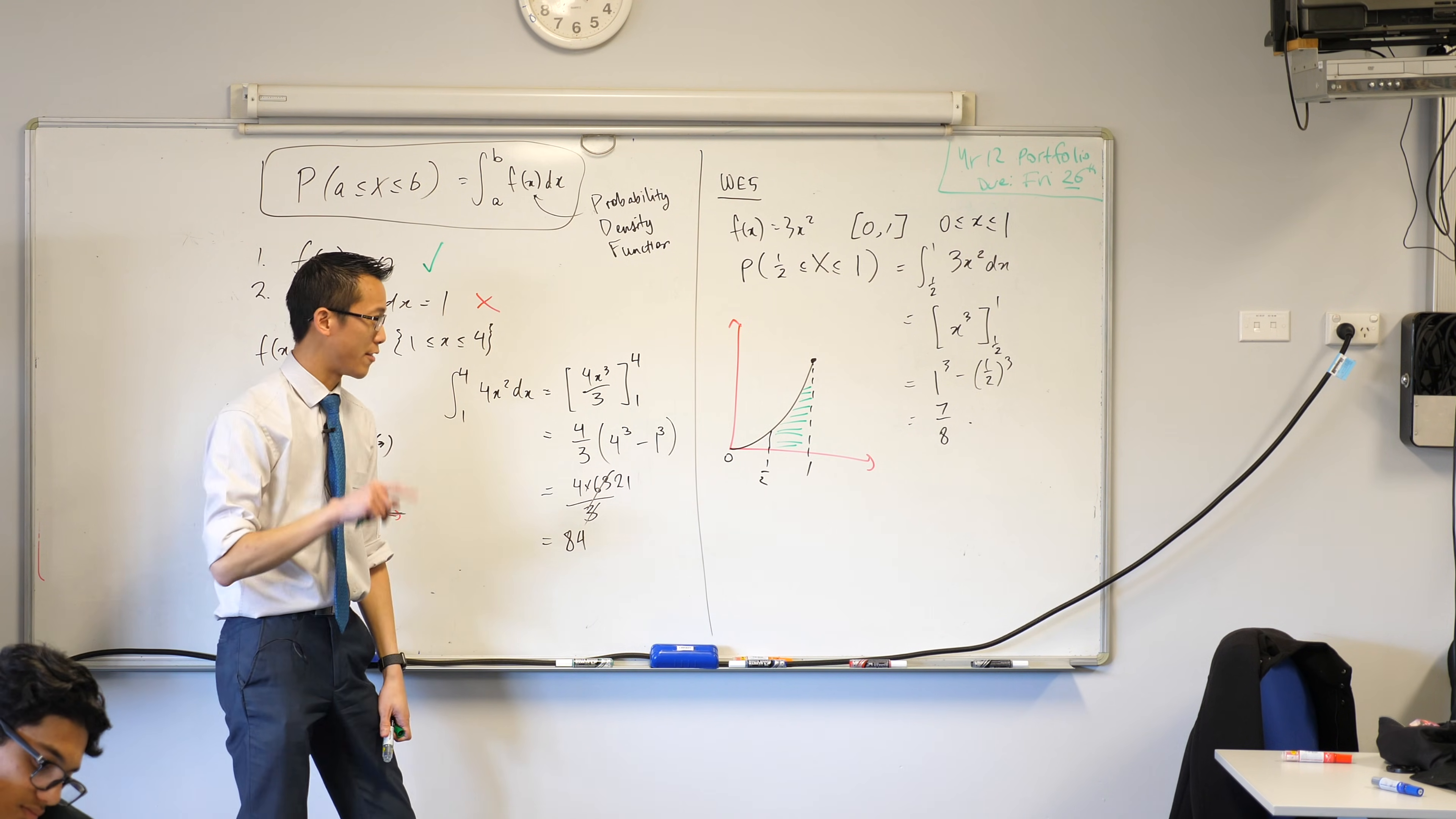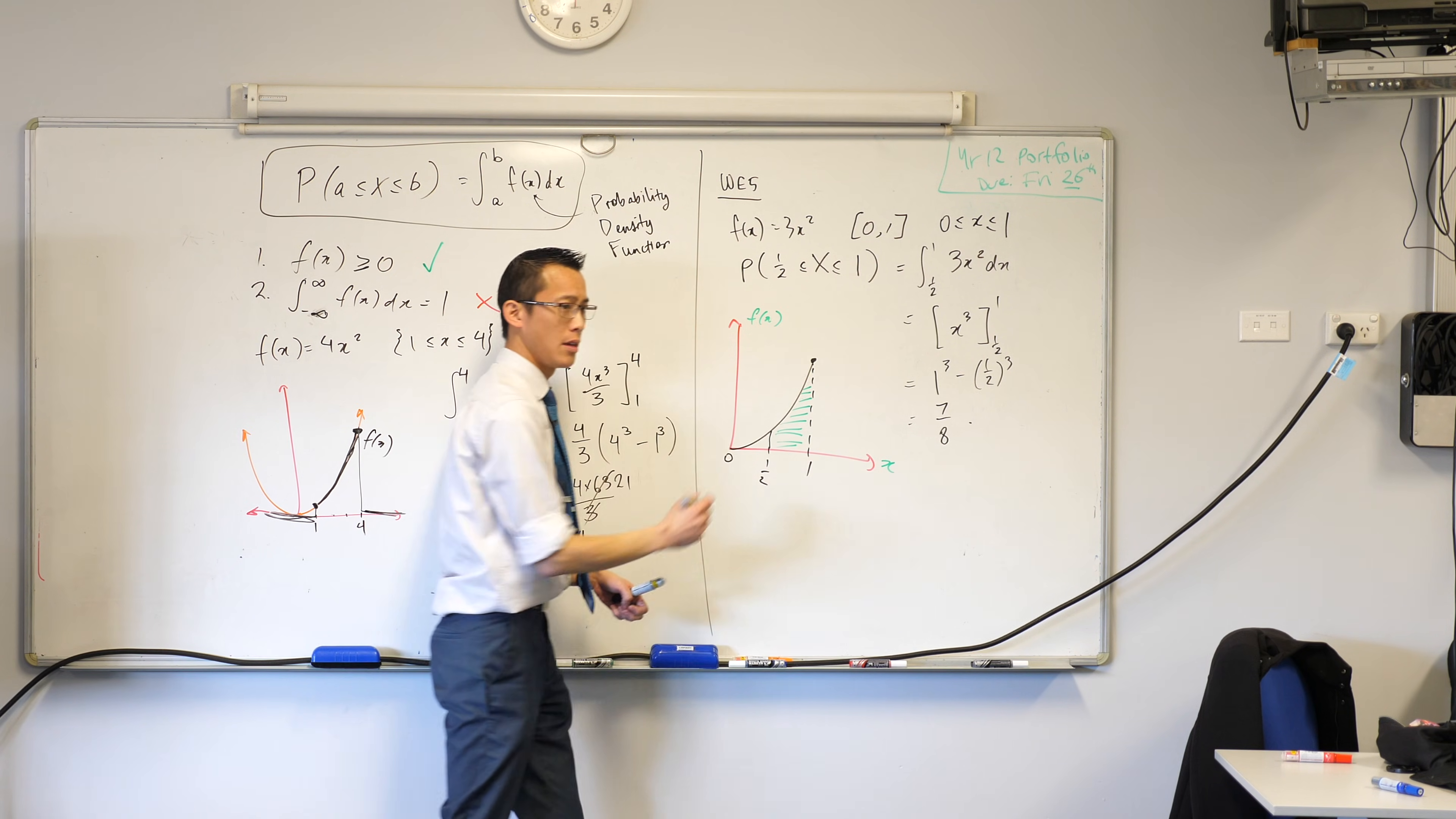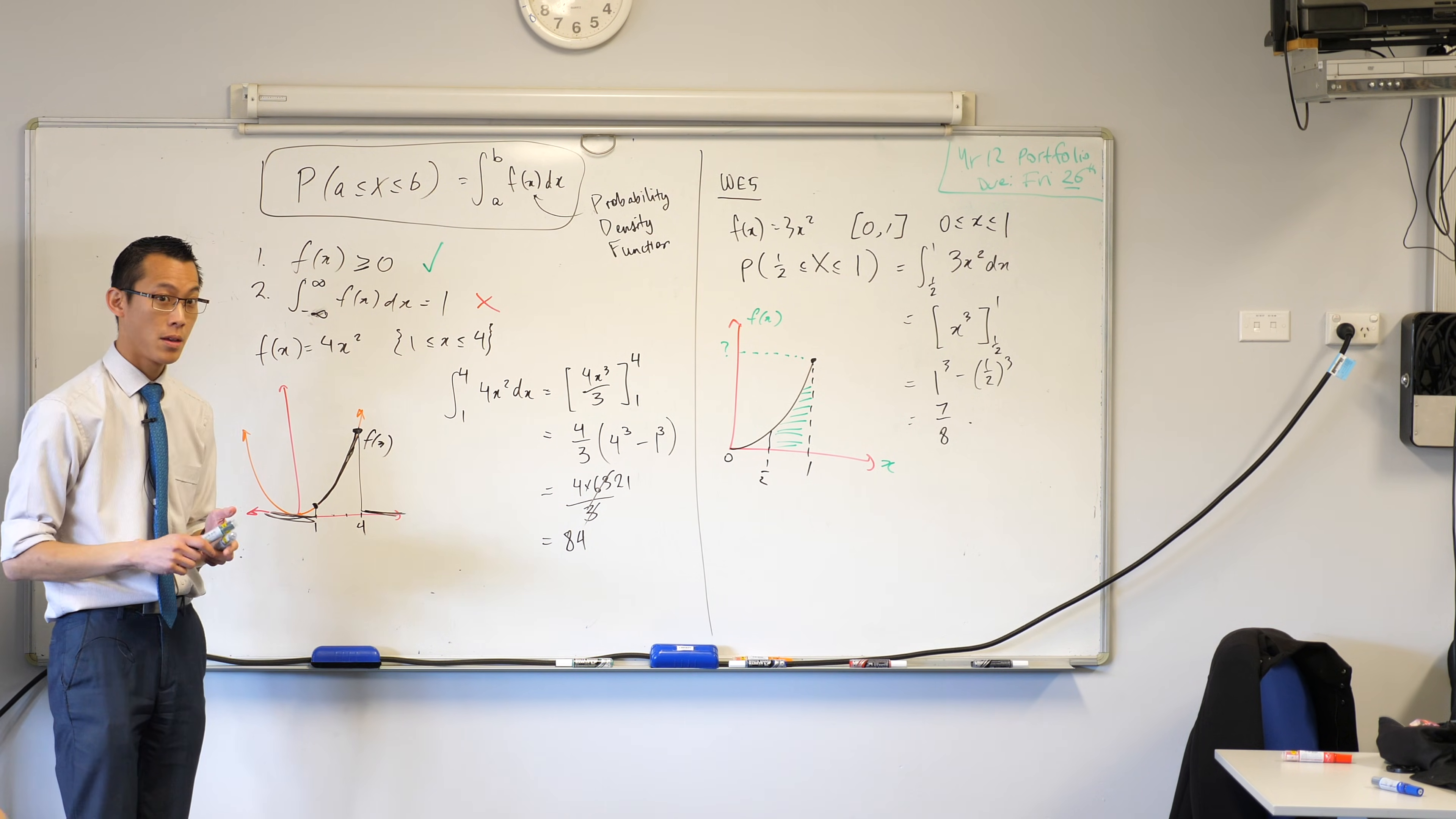One last thing we just need to be really careful for and I wanted to pick out this example to notice it. This is my x axis here, x, and this is f of x. What is this value up here? What's it equal to? Have a think. This function is 3x squared remember? Have a think. Think carefully.